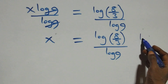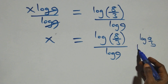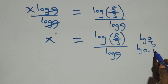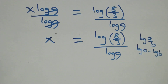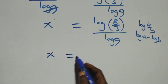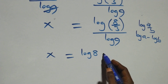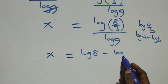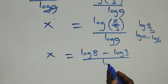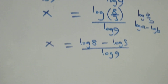This follows the log quotient rule: when we have log of a over b, it is the same thing as log a minus log b.